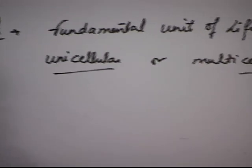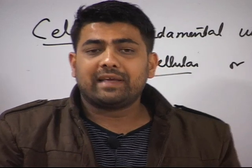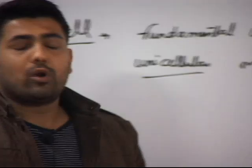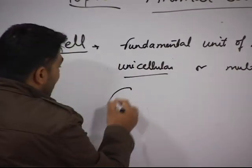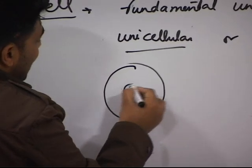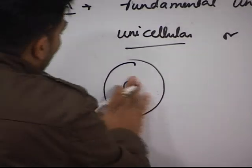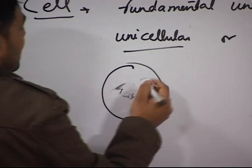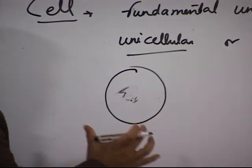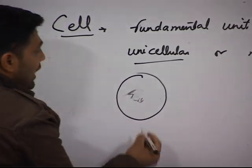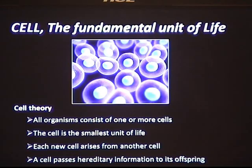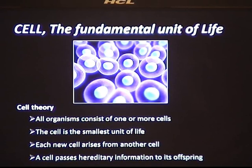A cell is considered as the basic and the smallest unit of life — it is something which is living. A typical cell is the smallest structure which we can regard as living. Cells can be categorized primarily into two types: a prokaryotic cell and a eukaryotic cell.